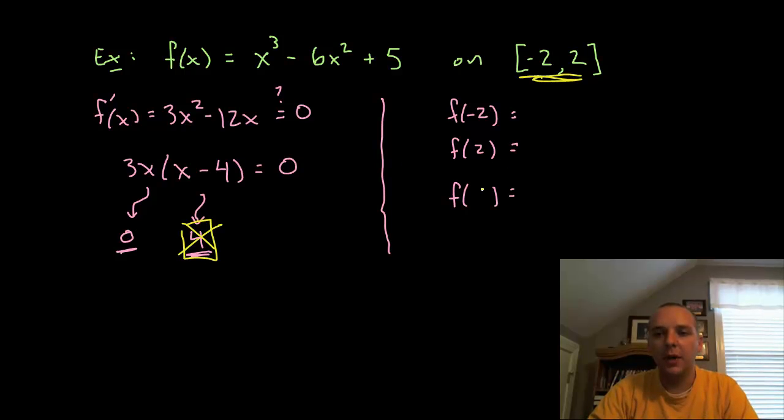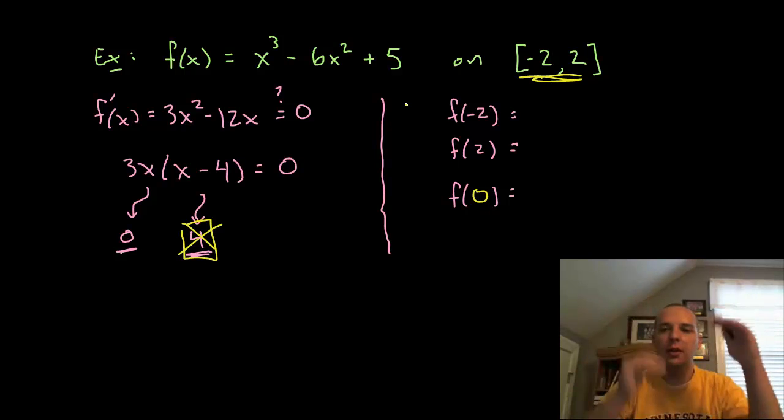Now f of zero, zero is between minus two and two, so I'm going to plug that one in. And we're just going to straight up plug these in, not in the derivative. I don't care what the slope is or anything like that. I just want to know what the y values are. King of the hill. Who's the biggest?